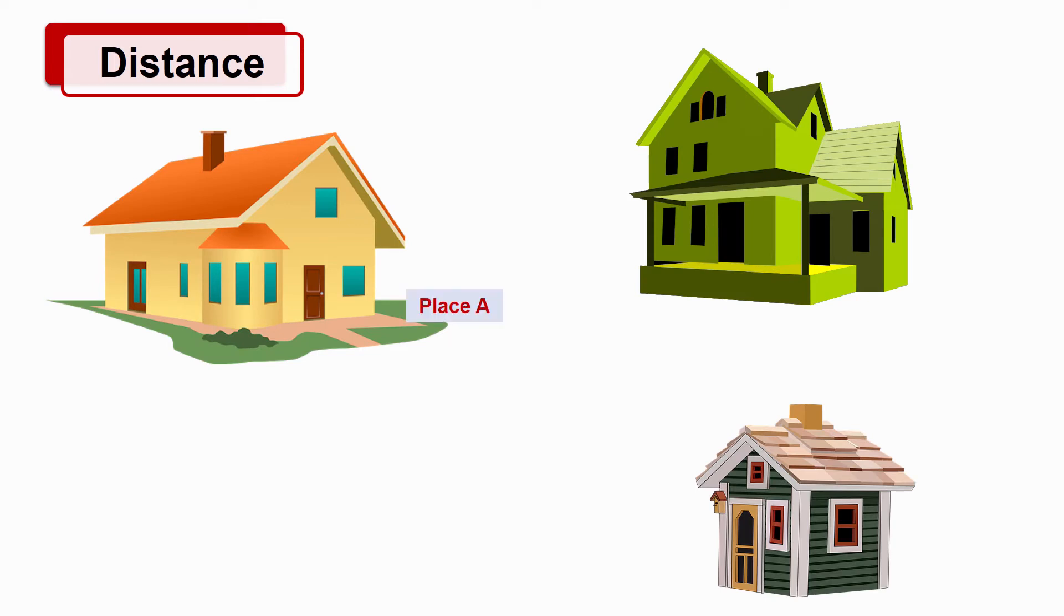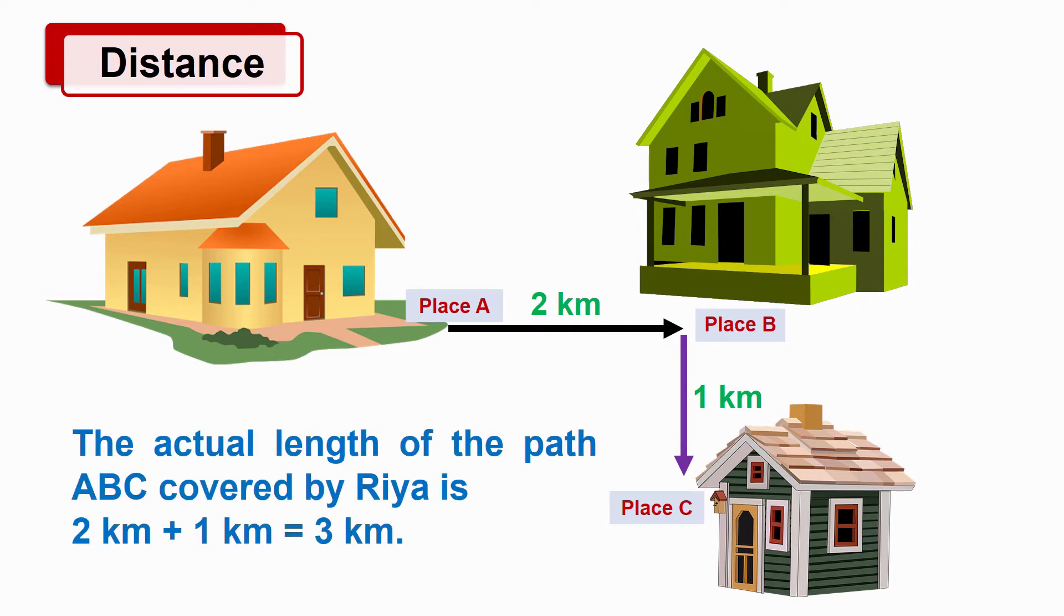Now, let's see what is distance. Suppose Rhea lives at place A and she has to reach another place C, but first she has to meet her friend living at place B. Now, Rhea starts her journey from place A and travels a distance of 2 km to reach B. Then she travels another 1 km from B to reach at C. Thus, Rhea goes along the path ABC. And the length of the path ABC gives us the actual distance travelled by Rhea. The actual length of the path covered by Rhea is 2 km plus 1 km equals 3 km. So the total distance travelled by Rhea from place A to reach at C is 3 km.